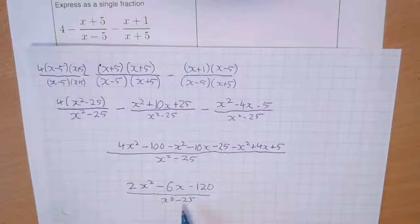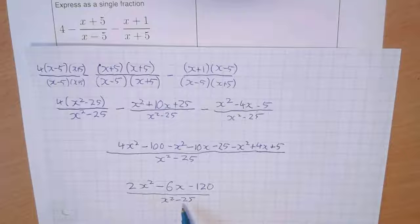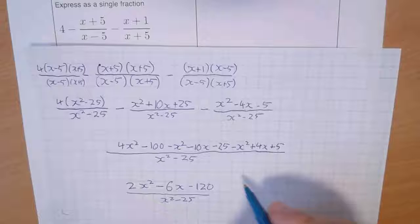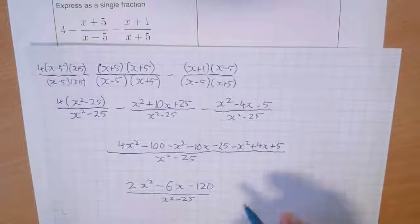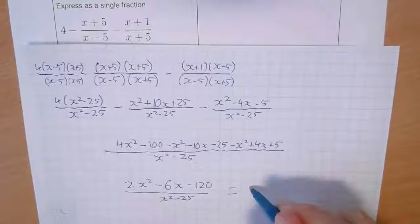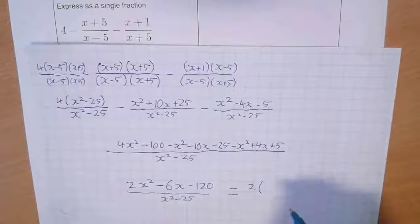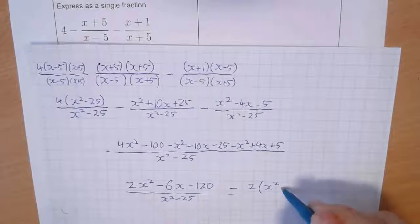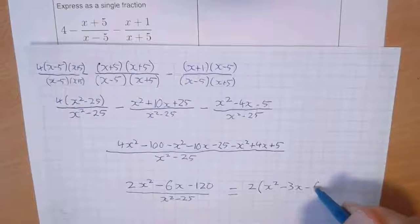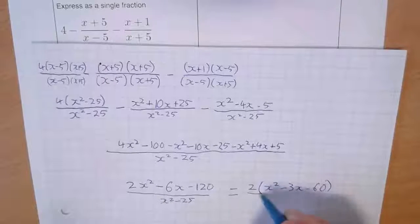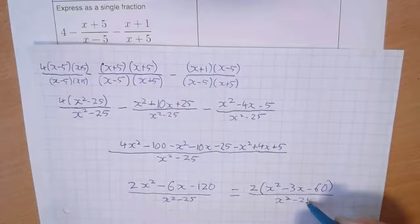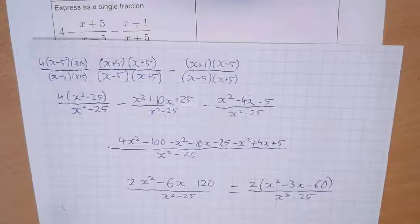If you wrote the denominator as (x+5)(x−5) that would be fine. If you factorize the top you could do that as well — that would also be fine. The question doesn't specify a format aside from it being a single fraction, so you could factorize if you wanted. Either form will be correct.